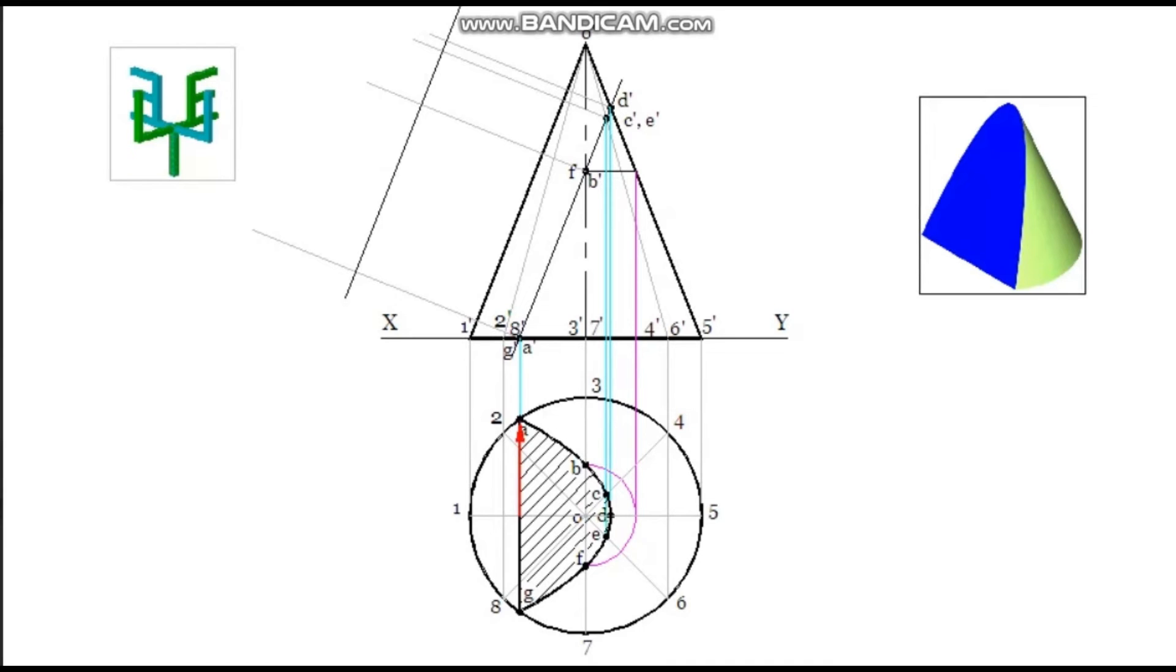Measure the distance of point A from the line 1, 5 in the plan. In the elevation, mark it on the line drawn through A' from the reference line. Measure the distance of G from the line 1, 5. Mark it on the line drawn through G'.